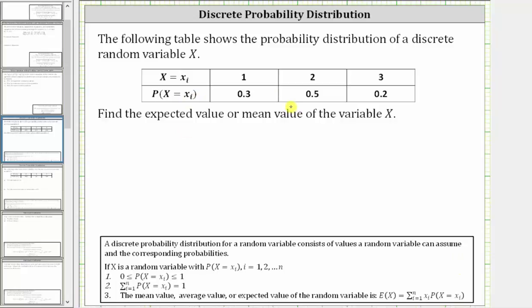Which means the expected value or mean value E(x) is equal to the first possible value of 1 times the corresponding probability of 0.3, plus the second possible value of 2 times the corresponding probability of 0.5, plus the third possible value of 3 times the corresponding probability of 0.2.